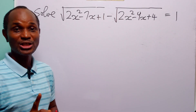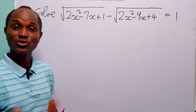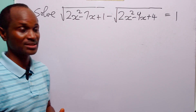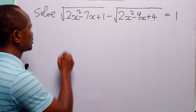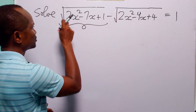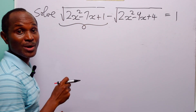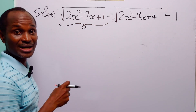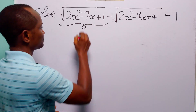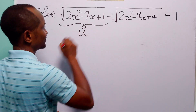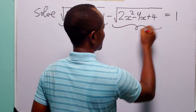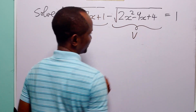This solution is going to begin with two very simple substitutions. We are going to call this quantity — that is the square root of 2x squared minus 7x plus 1 — u.